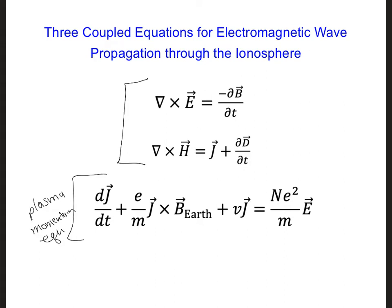And then here we have what's called the plasma momentum equation. And these are coupled together by the electric field, which shows up here and also here because we have epsilon E, and also the J current density, which shows up here and in this equation.